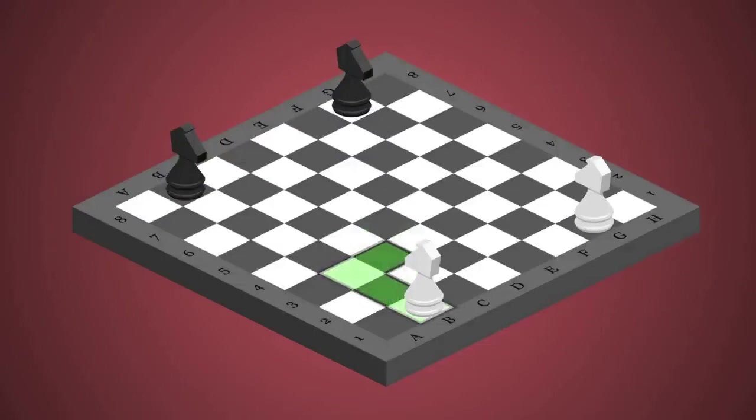Two squares horizontally and one vertically, or one horizontally and two vertically. Keep in mind that knights can capture a piece only when they land on that piece's square.